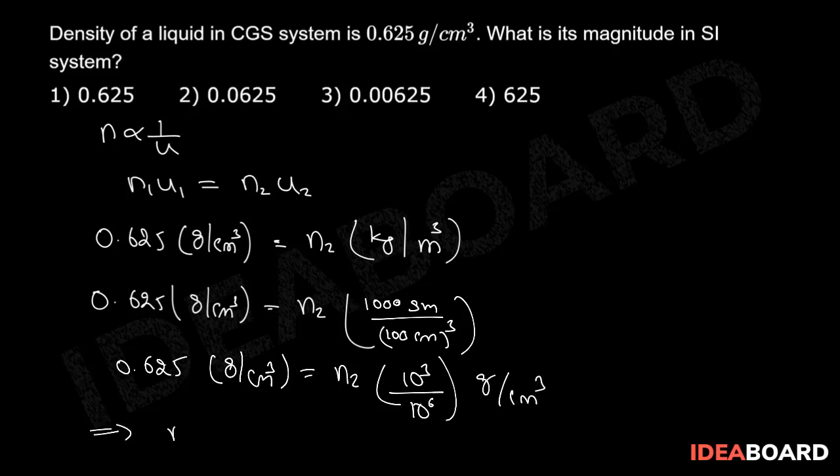This implies N2 value should be equal to 0.625 into 10 to the power of 3, which is equal to 625. So the magnitude of density in SI units is 625. So the right answer for the given question is option 4.